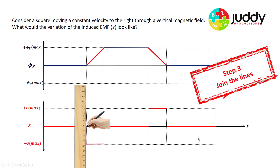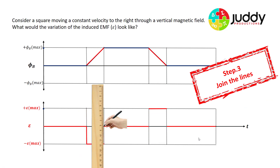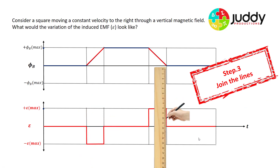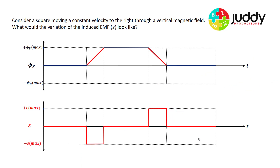Step three is simply joining the lines to fill in the gaps. And there we have it — that is what the variation of the induced EMF looks like for this scenario.